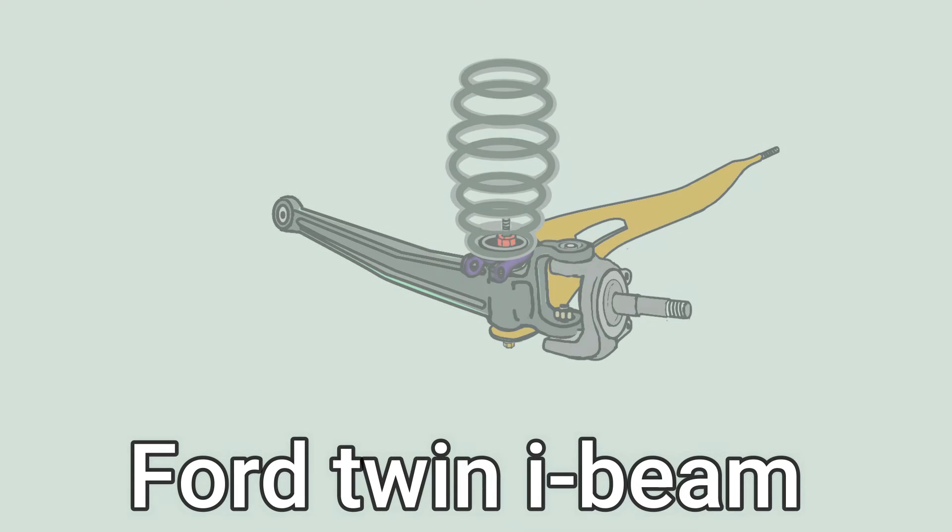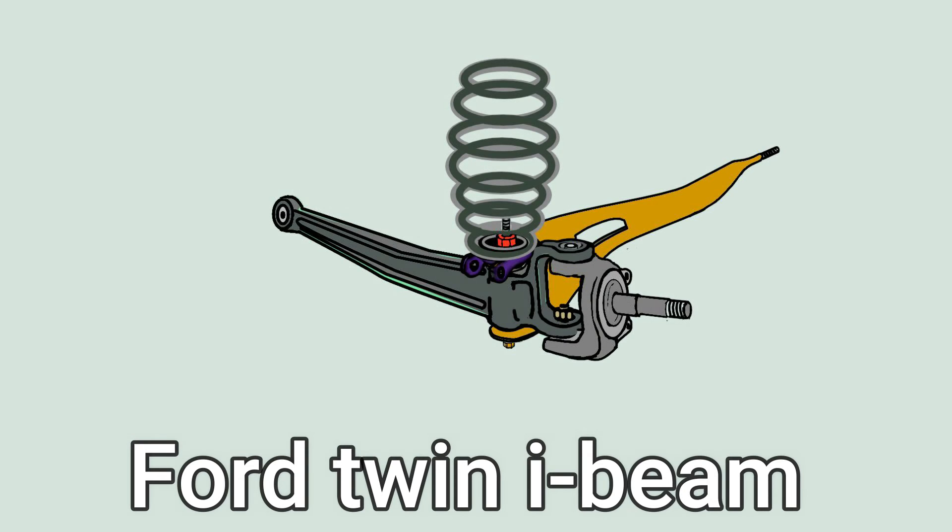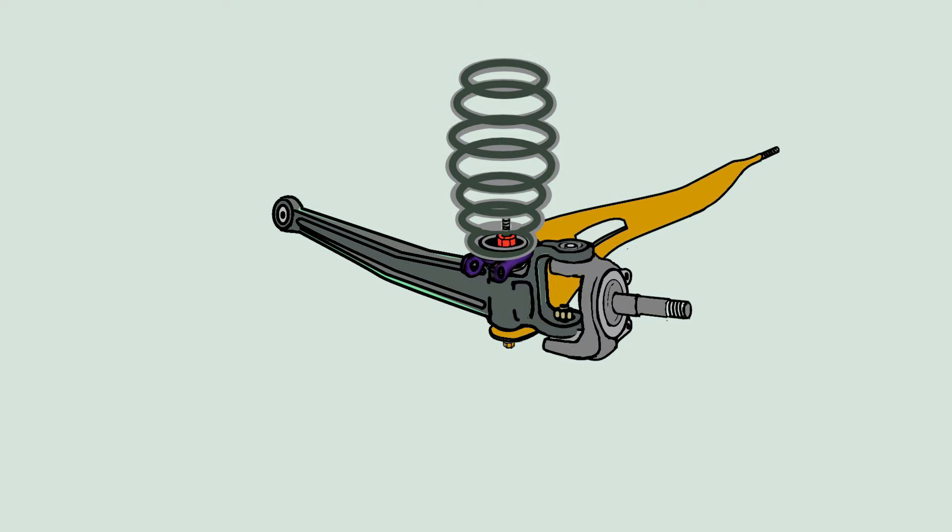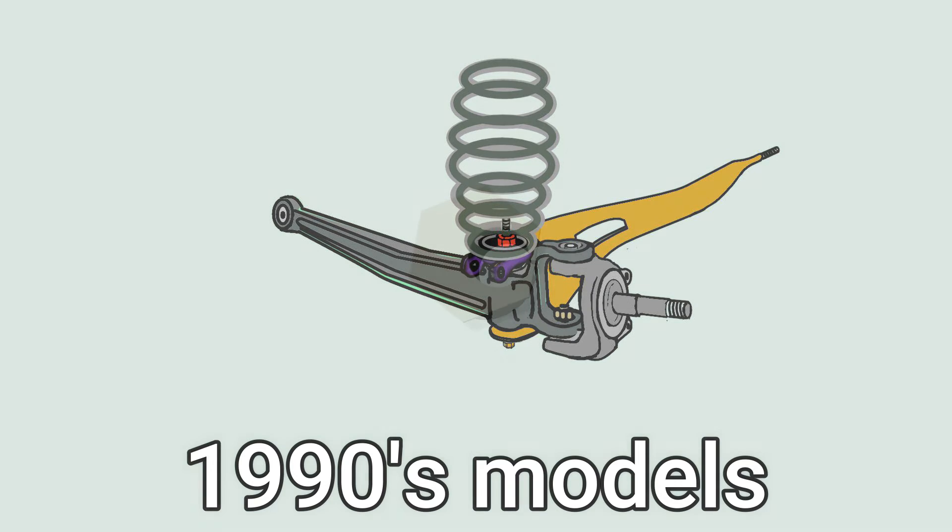On this tutorial I will describe the typical twin I-beam suspension used on Ford trucks and the way to adjust camber and caster angles using an aftermarket adjustment sleeve. I'm talking about the Ford trucks from the 1990s.